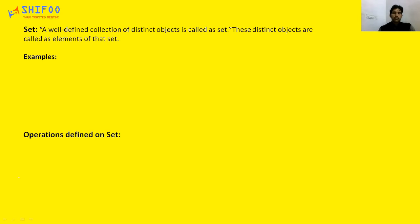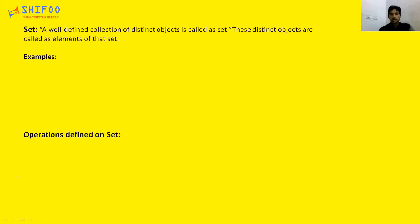What is a set? I think everyone might have studied this in their 10th standard. A well-defined collection of distinct objects is called a set, and these distinct objects are called elements of that set. We use 'well-defined' because there should be some pattern, and repetition is not allowed — that's why we use 'distinct objects.'